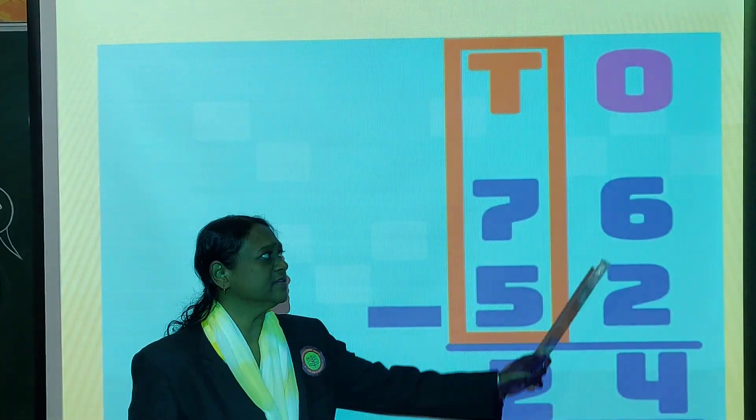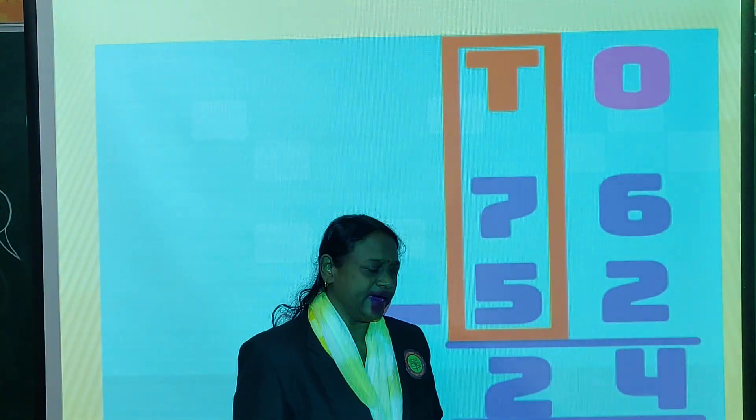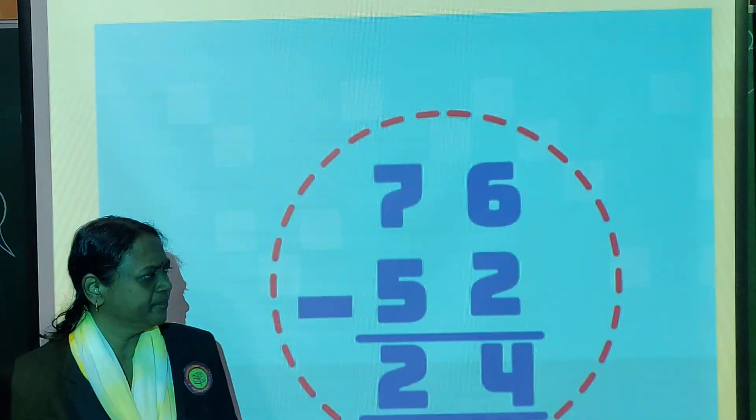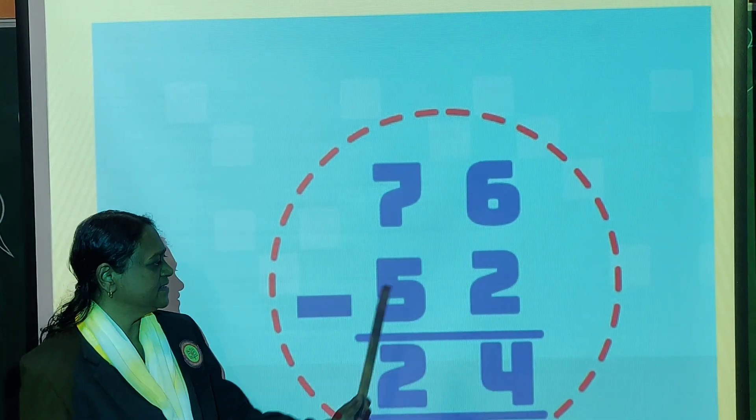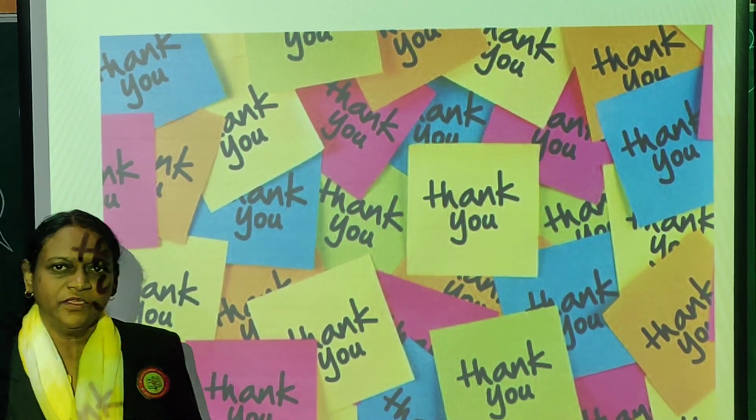So always remember, start from right side. First do the subtraction of ones side, then of tens. And you have to solve this answer. Okay, 76 minus 52, the answer is 24. Thank you.